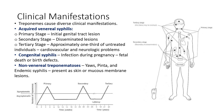The treponemes, or the syphilis-causing pathogens, can cause a diverse range of clinical manifestations in the host. They are categorically classified into acquired venereal syphilis, which has three different stages: primary, secondary, and tertiary. There is also congenital syphilis, which is an infection that occurs during pregnancy, and finally the non-venereal treponema species, which can be classified as yaws, pinta, or endemic syphilis, generally present on the skin or mucous membranes.